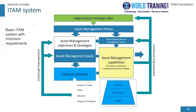This diagram shows the overall ITAM system — the basic system with minimum requirements. At the top is the organization's strategic plan, below that the asset management policy. On the left side: asset management objectives and strategies, then asset management plans, and the actual lifecycle activities of request, acquire, create, utilize, maintain, dispose, replace, etc. On the right side: through the policy we have the development plan for the management system, then the established asset management capabilities, then the portfolio asset system with assets at the bottom. There is continual improvement across all components of the ITAM system.